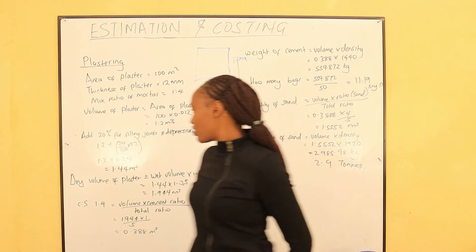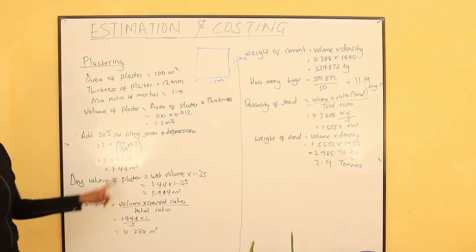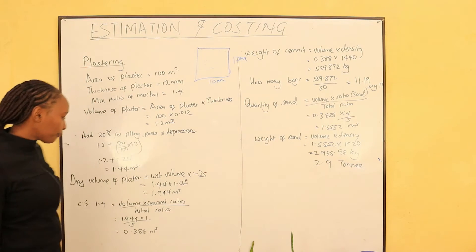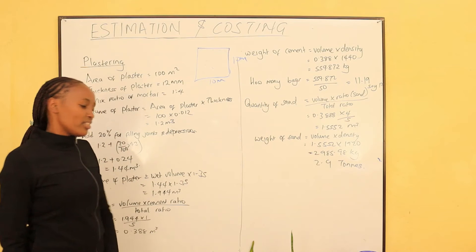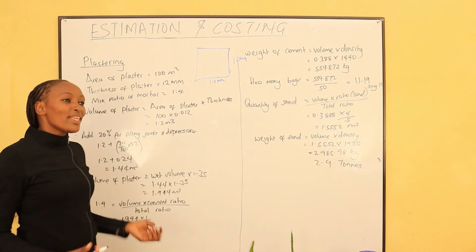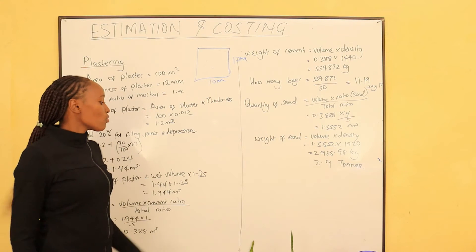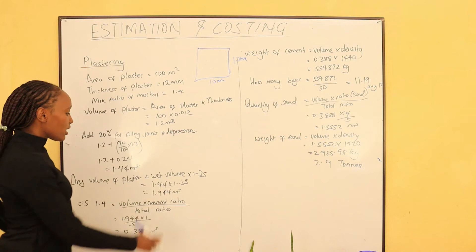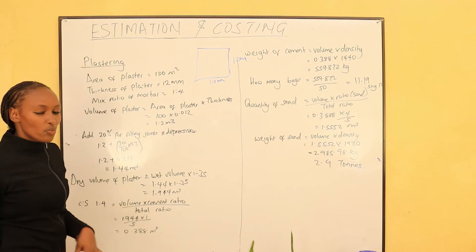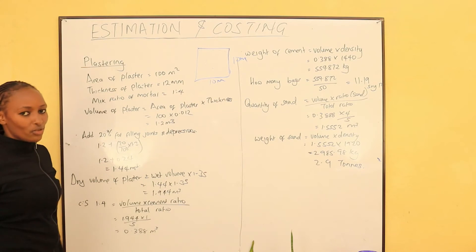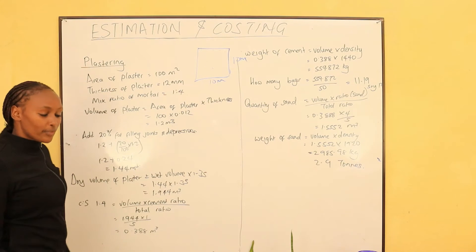The total volume of our mortar is 1.44 meter cubed. What was the dry volume? The dry volume is usually equal to the wet volume times 1.35 — because we assume the cement and sand will shrink by 35%, so we account for that 35%. So 1.44 times 1.35 — meaning 1.44 was the 100% and we are calculating 135% of that — we shall get 1.944 meter cubed as the dry volume for the plaster.